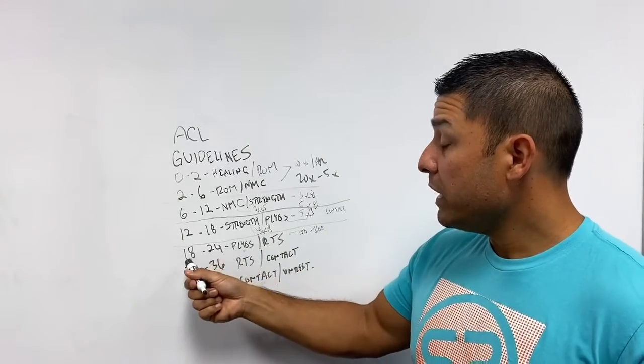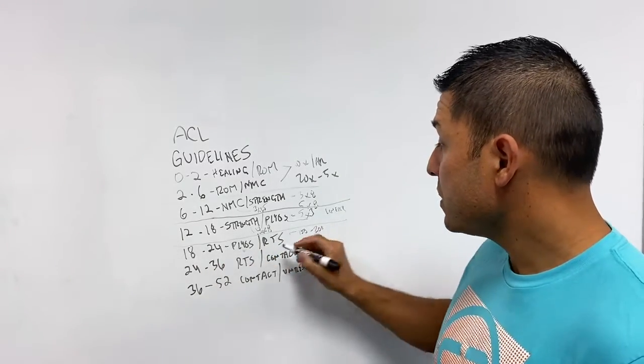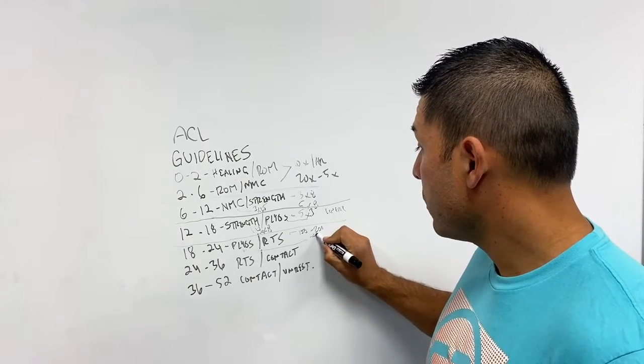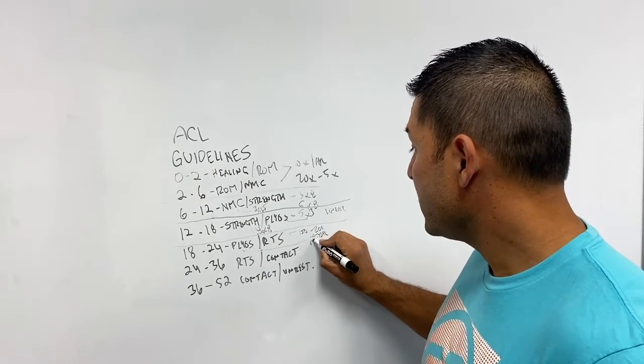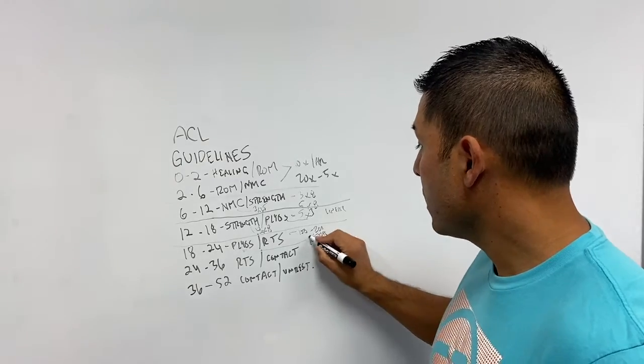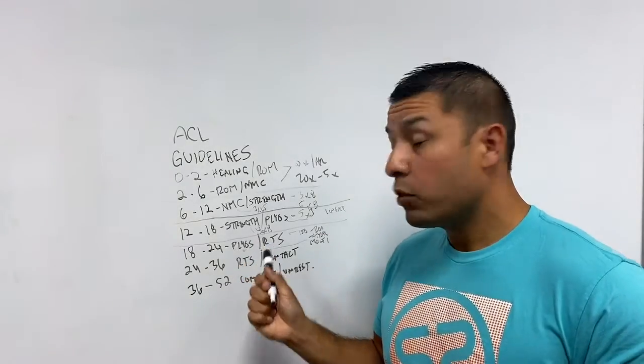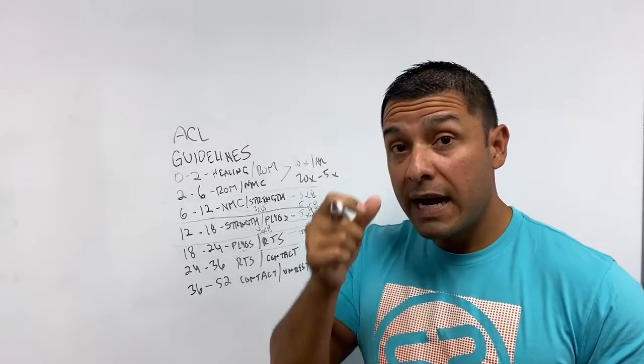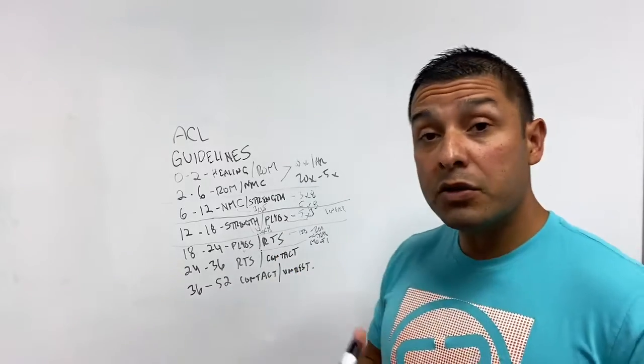This was pretty much your primarily focusing on linear base plyos depending on their sport. On plyos that week four to six months, you can start to look at not just linear, but now you're doing lateral and a touch of multi-directional work, and then return to sport criteria, obviously non-contact, and they're probably going to have a brace on depending on your surgeon.